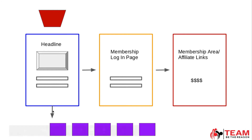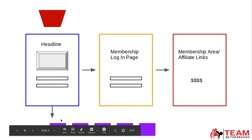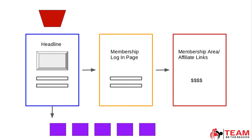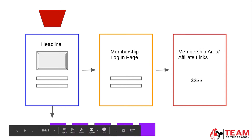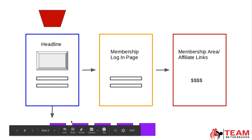Once they submit this form, they drop down into our email autoresponder. This is the biggest asset online — our email list. They drop into these buckets, and I'm going to give you five pre-written emails that you can include right into your autoresponder that will help you build rapport with your customers. I'm going to show you exactly how to set up these emails.